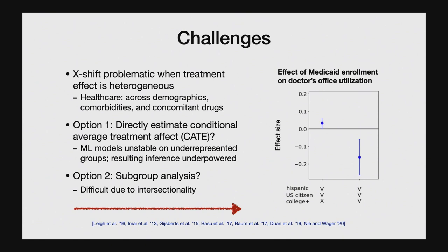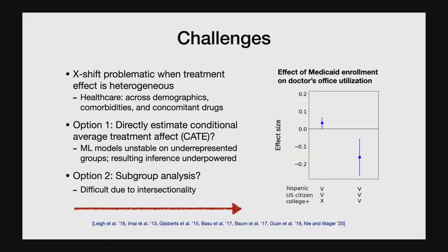ML models tend to be extremely unstable on certain parts of the covariate space, especially when the data inherits the biases and power structures throughout society. If you naively use that ML method, you often end up with an extremely underpowered decision. As an alternative, a useful heuristic might be to look at a finite set of predefined demographic groups and measure the treatment effect on each. But this can also be challenging because there's a lot of intersectionality in treatment effects — your treatment effect is often heterogeneous, determined by a combination of race, income, age, gender, and in medical scenarios, genetic information.